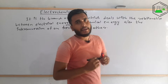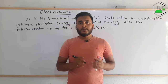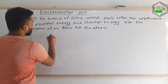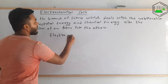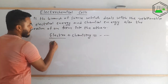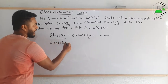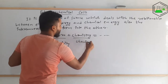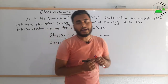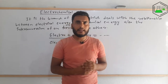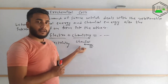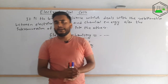Electrochemistry is the branch of science that deals with the relationship between electrical energy and chemical energy. The meaning is clear from the word itself — electro plus chemistry gives us electrochemistry. Electro means electricity, that is electrical energy, and chemistry means chemical energy. So electrochemistry simply deals with the study of the interconversion of one form of energy into another — sometimes electrical energy into chemical energy, sometimes chemical energy into electrical energy.